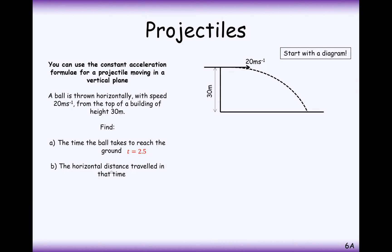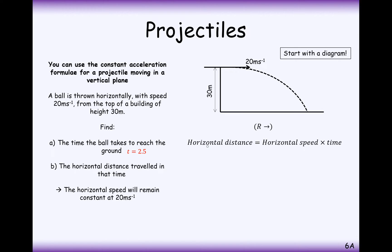Once we've done that, we can answer the question of finding the horizontal distance travelled in that time. We do horizontal SUVAT, or use distance equals velocity times time, because there is no acceleration in the horizontal direction — it's just going to travel at 20 metres per second until it hits the ground. So horizontal distance equals 20 times 2.5, giving 50 metres.